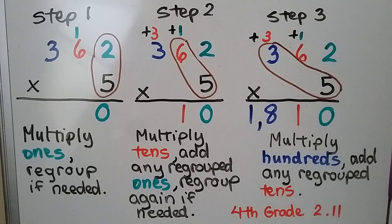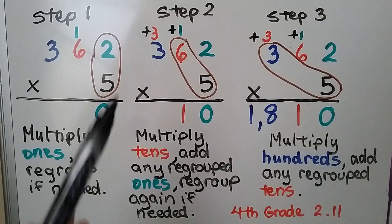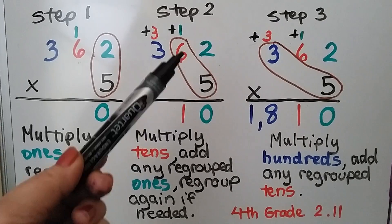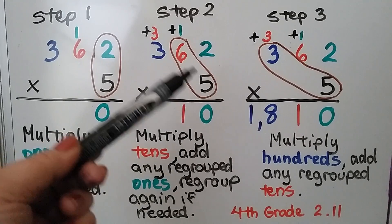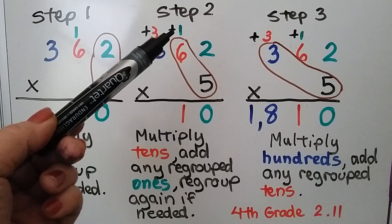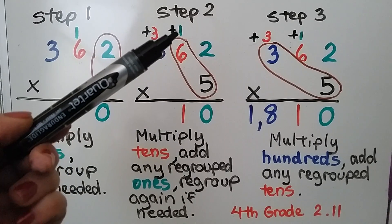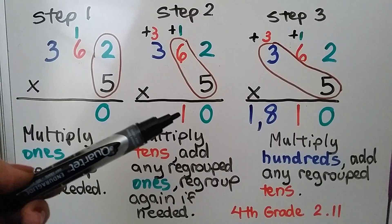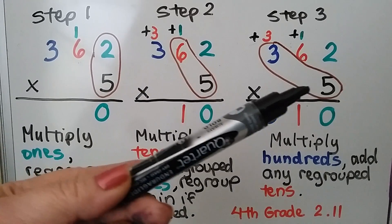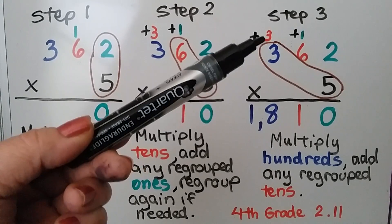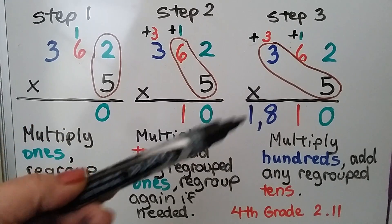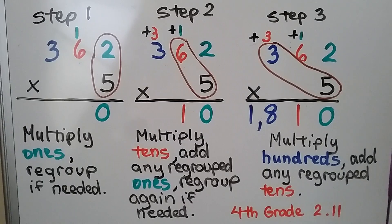One of the most important things to remember from this video: when you're regrouping and multiplying the next greater place value, we multiply first and then add the regrouped number. For example, 6 times 5 is 30, plus 1 is 31. Or 5 times 3 is 15, plus 3 is 18. We're not grouping them together into one big multiplication problem — we multiply and then add the regrouping.